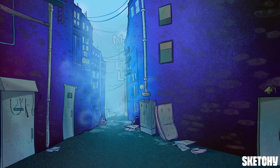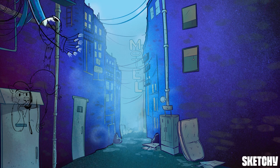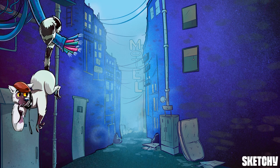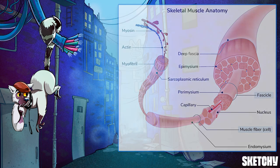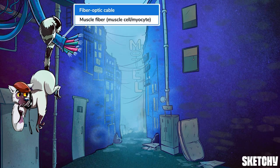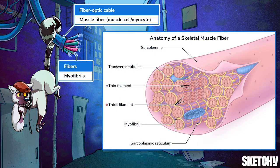Before we get in too far, a quick orientation is in order. Skeletal muscles manipulate the skeleton, producing movement. Whole skeletal muscles are broken down into numerous fascicles, and each fascicle consists of bundles of muscle fibers, which are individual muscle cells — or myocytes, if you want to get technical. We represent a muscle fiber with this large fiber optic cable. A single muscle fiber contains even smaller pieces called myofibrils, just like how the fiber optic cable contains many smaller wiry fibers of its own.